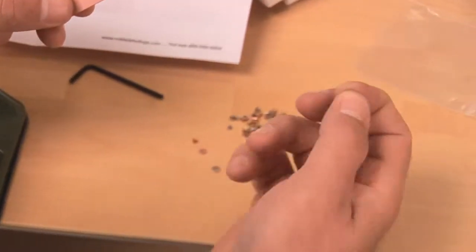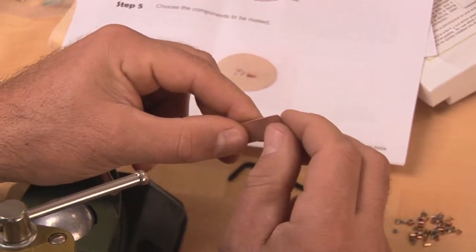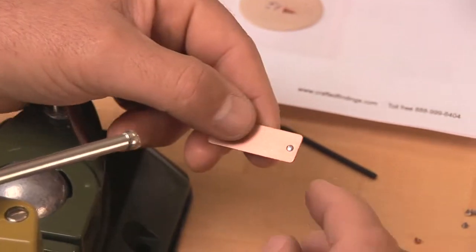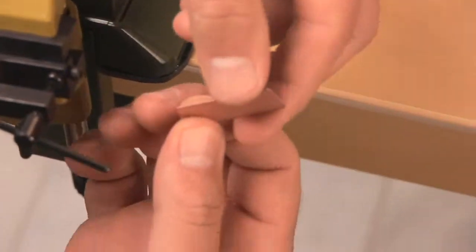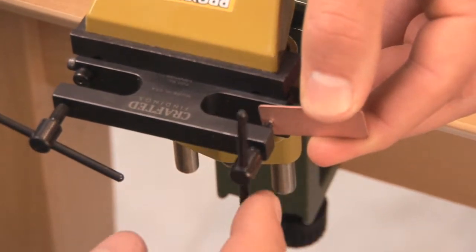Now, let's do a rivet. In this case, we'll use the shortest rivet from the sample pack and put it in the hole we just pierced. Right out of the box, the other side of the tool base is ready to set rivets.